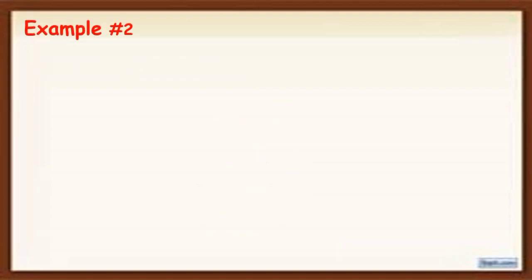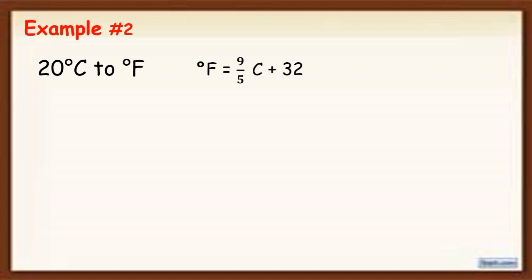Another example — we are going to convert 20 degrees Celsius to degrees Fahrenheit. Again, let's use the formula F = 9/5 × C + 32. We substitute the value of C, which is 20 degrees. So in the formula, we replace C with 20.